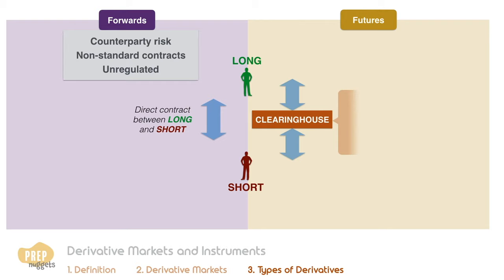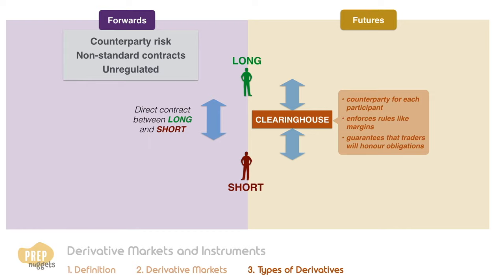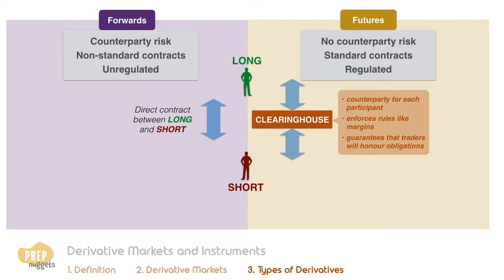The clearing house also acts as the counterparty for each participant. The clearing house enforces rules like margins on the participants, which allows it to guarantee that traders in the exchange will honor their obligations. This guarantee removes counterparty risk from futures contracts. In the history of US futures trading, the clearing house has never defaulted on a contract. To facilitate trading, futures are standard contracts where traders either take the long or short position with standard sizes. Futures markets are usually regulated by the government.